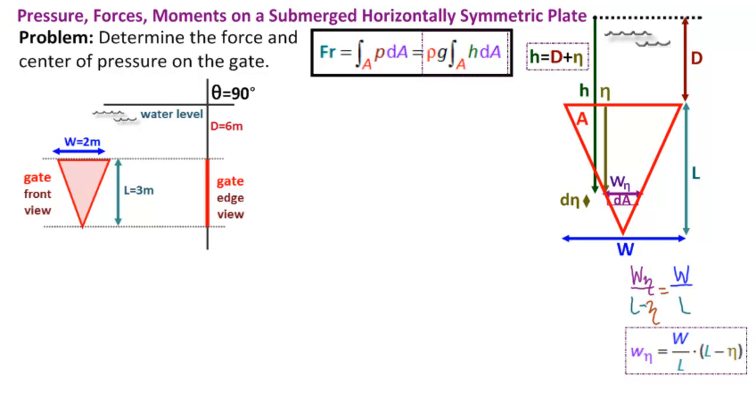First thing, rho times G. Rho times G is rho water times G here because we have water. Rho water is 1000 kilograms per meter cubed. G is 9.81 meters per second squared. So this gives us 9,810 newtons per meter cubed. dA is equal to d eta times W eta, which is W over L times L minus eta.